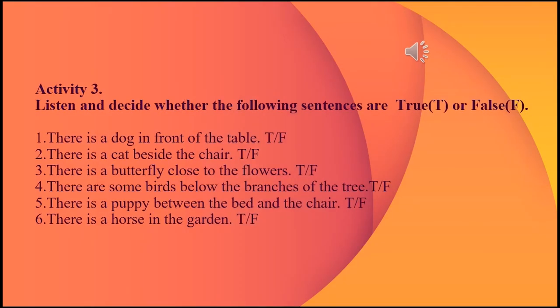There is a dog in front of the table. There is a cat behind the chair. There is a butterfly close to the flowers. There are some birds above the branches of the tree. There is a puppy between the bed and the chair. There is a horse in the garden.